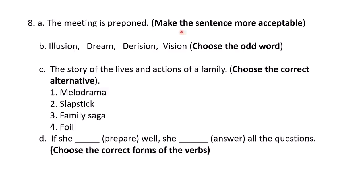Eighth question. A: 'The meeting is preponed.' Make the sentence more acceptable. This is Indian English and we have to convert it to native speaker usage — 'The meeting is advanced' is the right sentence. B: Illusion, dream, derision, vision — choose the odd word. Vision is the odd word because illusion, dream, and derision are all imaginary words, while vision is a true phenomenon.